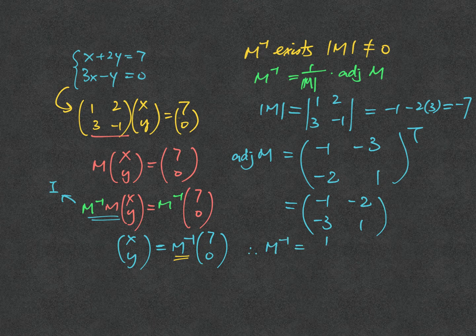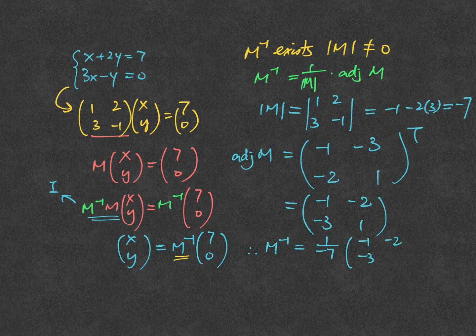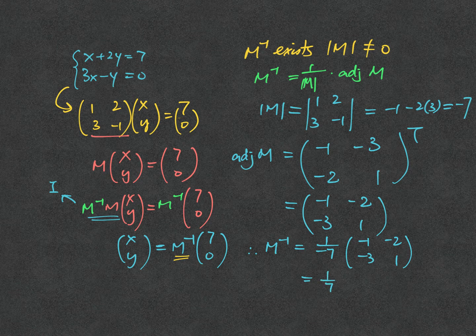So as a result, M inverse will be given by 1 over negative 7, multiplied to minus 1, minus 2, minus 3, and 1. So it's 1 over 7 multiplied to 1, 2, 3, and minus 1.